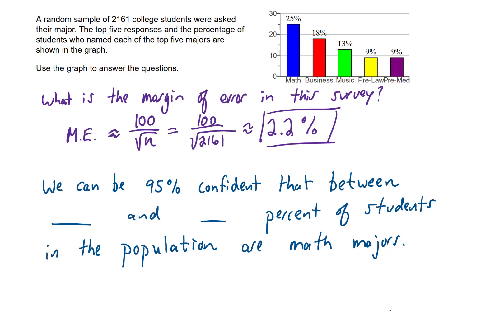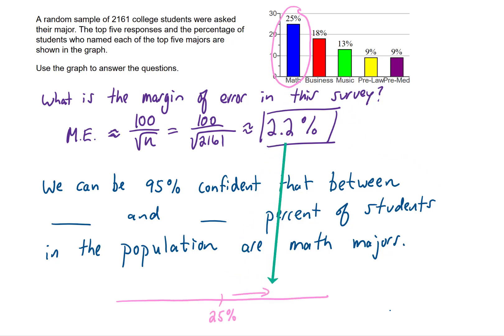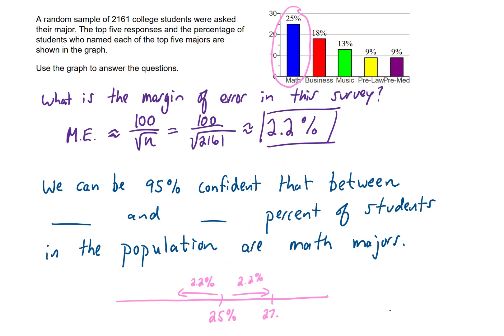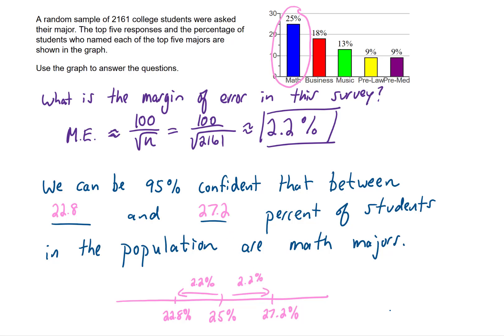Now let's find a 95% confidence interval for students in the population who are math majors. In our survey, 25% of those surveyed were math majors — that's the center of our confidence interval. Adding and subtracting the 2.2% margin of error gives us 27.2% for the upper bound and 22.8% for the lower bound. So we're 95% confident that between 22.8% and 27.2% of students in the actual population are math majors.